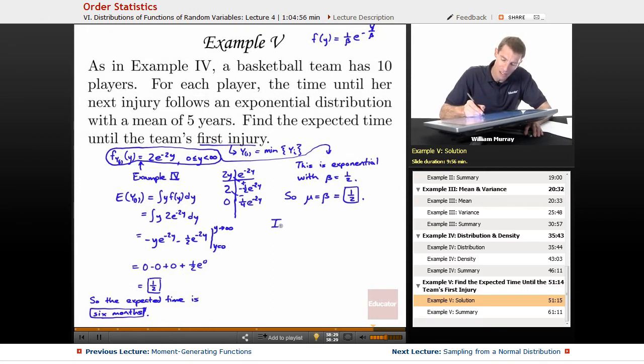Let me generalize this a little bit. We already have our answer here. We know that it's going to be about six months until our team's first injury. Let me mention where that two came from. If you look back at example four, where that two came from was it just came from the 10 divided by the five. 10 was the number of players on the team, and five was the mean of the original distribution, and so that one half in turn came from the five divided by the 10, which in turn the five was the beta, the mean of the original distribution, and 10 was the number of players, so beta over n.